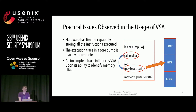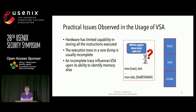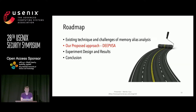In the real world, we cannot accurately pinpoint memory aliases as expected. The log of an execution trace relies on specific hardware. However, this hardware has limited capability to record all the instructions executed. This means the execution trace in a call dump is usually incomplete. An incomplete trace will hamper VSA's ability to identify memory aliases. Without the ability of recording all the instructions, VSA can no longer trace where the value of EAX comes from. As a result, it cannot determine which region the EAX memory refers to.